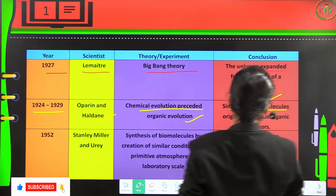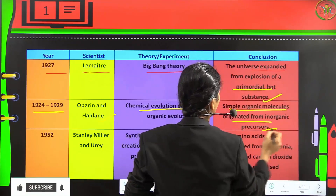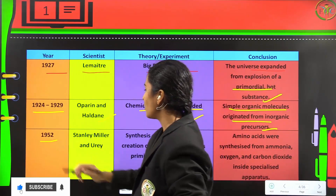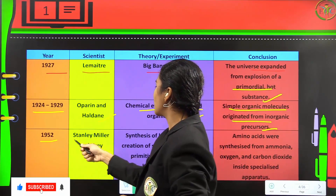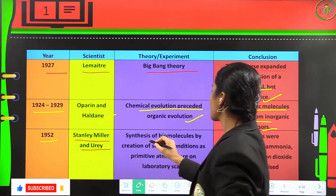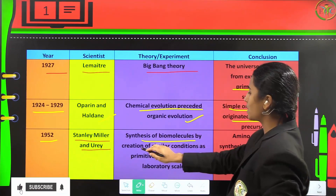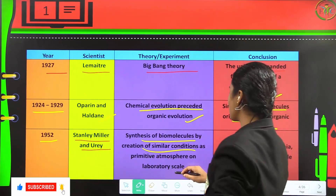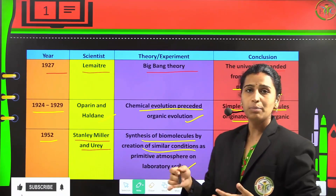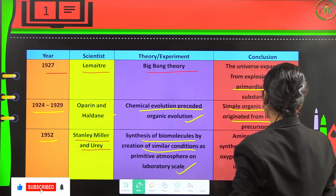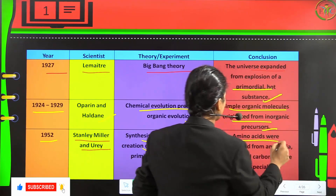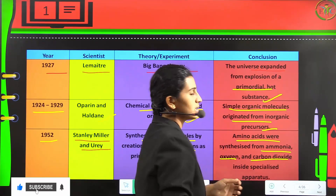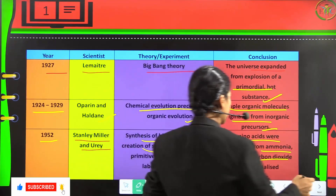Simple organic molecules originated from inorganic precursors, which caused evolution. In 1952, Stanley Miller and Urey synthesized biomolecules by creating conditions similar to the primitive atmosphere on a laboratory scale. They proved this experimentally, and amino acids were synthesized from ammonia, oxygen, and carbon dioxide inside a specialized apparatus.